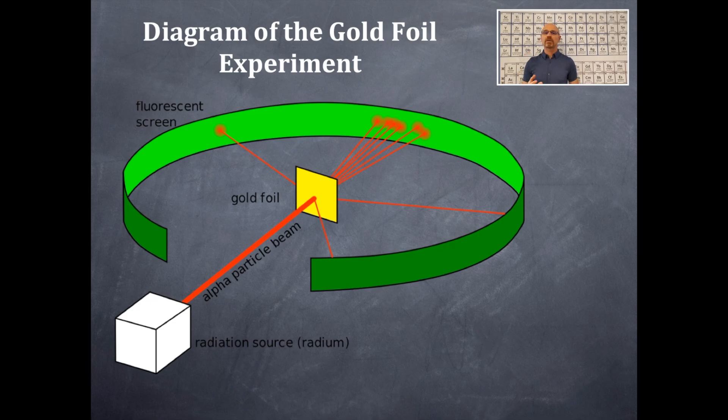Now every now and then, a rare event, one in 8,000, that alpha particle actually hit something solid and was deflected back towards the source of alpha particles. And that was when it hit the nucleus.